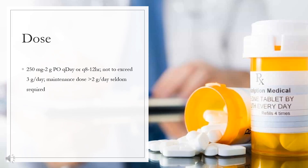Dose for Type 2 Diabetes: 250 mg to 2 g orally per day or every 8 to 12 hours, not to exceed 3 g per day. Maintenance dose of 2 g per day is seldom required. Divided doses may minimize gastrointestinal side effects.